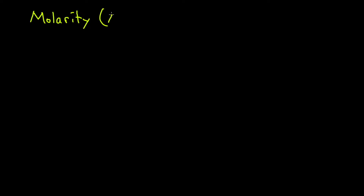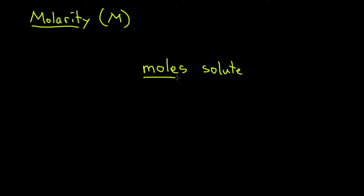First we're going to talk about molarity. It is marked by the capital letter M and the units of molarity are moles of solute over liters of solution. A solution is made up of chemicals that are solutes and solvents. Solvents are typically in higher quantity than the solutes. So if we have salt in water, the salt is the solute, the water is the solvent. Solvents are breaking down the solutes and dissolving them.